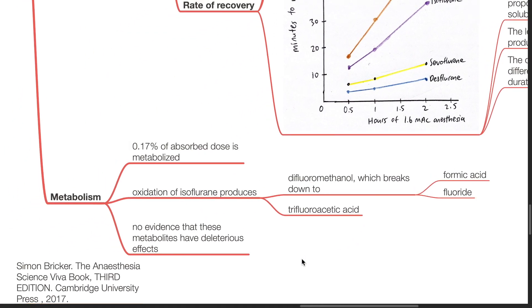Metabolism. 0.17% of the absorbed dose of isoflurane is metabolized. Oxidation of isoflurane produces difluoromethanol, which breaks down to formic acid and fluoride. Oxidation of isoflurane also produces trifluoroacetic acid. There is no evidence that these metabolites have deleterious effects.